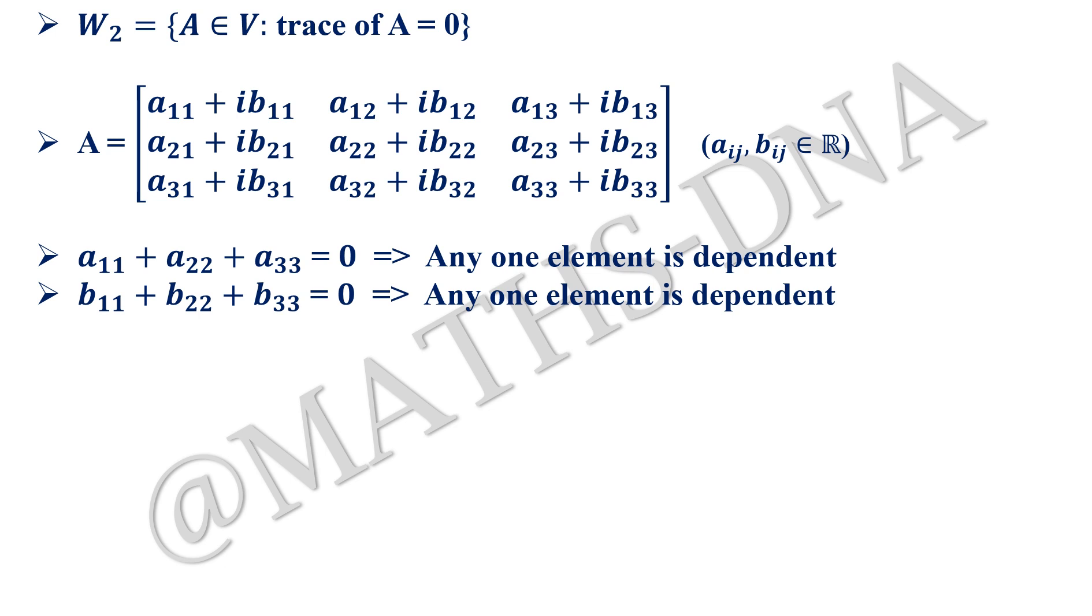They take all the three to be dependent. No, you can take two independent values, only one value will be dependent. If it is n×n also, if there are n entries also, then also you can take n - 1 entries to be independent. Only one entry will be dependent because simply think about it.